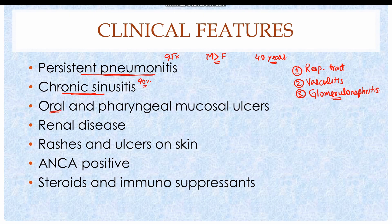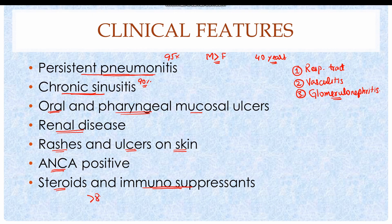In more severe cases, there is formation of ulcers in the oral and pharyngeal mucosa. Renal involvement results in glomerulonephritis characterized by hematuria and proteinuria. There could also be a rash, and ulcers are often present on the skin due to vasculitis. Majority of cases are ANCA positive, so diagnosis is based on clinical signs and detection of ANCA antibodies in the serum. Treatment of Wegener's Granulomatosis is with steroids and immunosuppressants. More than 80% of untreated cases can prove fatal within one year of onset.